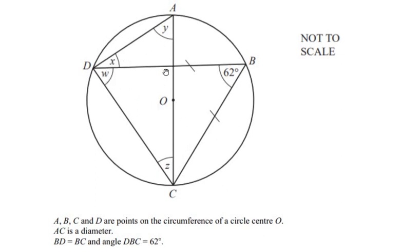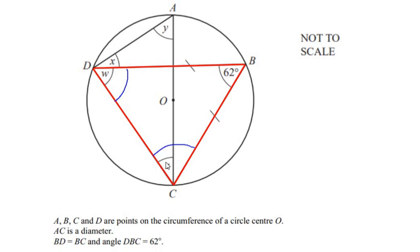Let us start by looking at triangle BDC, where it is given that side BD is equal to side BC. Since two sides of triangle BDC are equal, this is an isosceles triangle, so angle D is equal to angle C. We can now apply the angle sum property of the triangle.